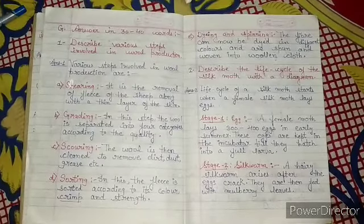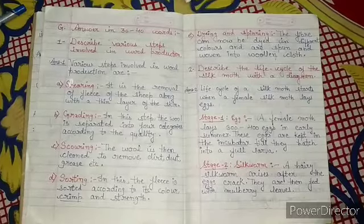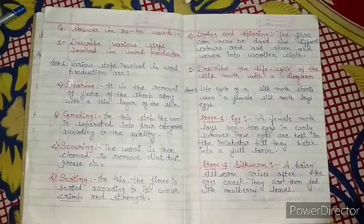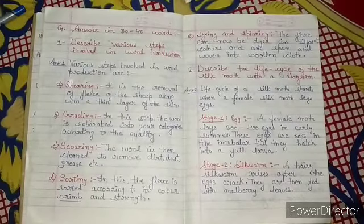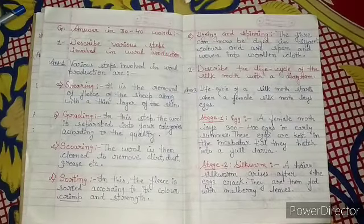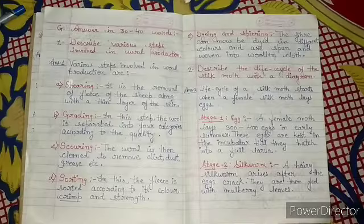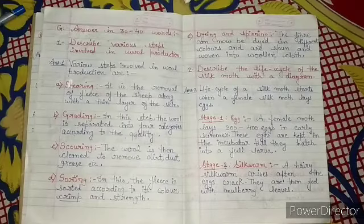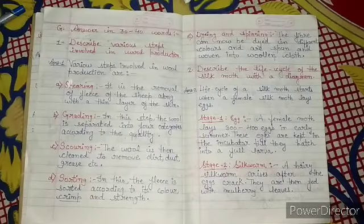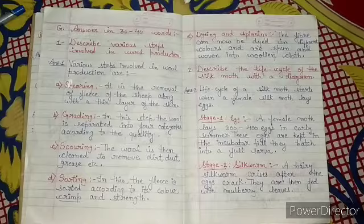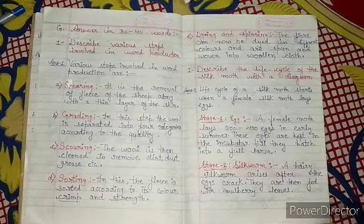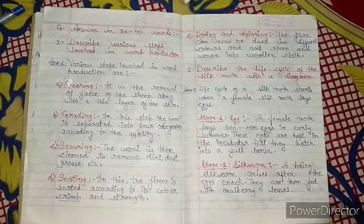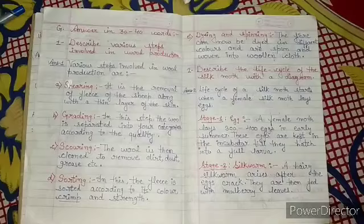Next hai humaara sorting step. Isme kya hoga — fleece ko sort karte hai according to its color, cream, and strength. Strength ke, cream ke aur color ke according hum uske sorting karte hai, uske charting ke alag karte hai. Last step hai humaara dyeing and spinning.